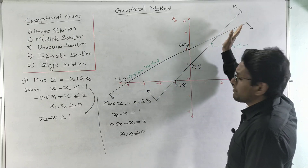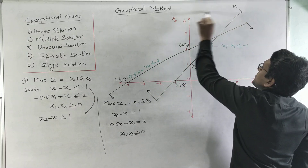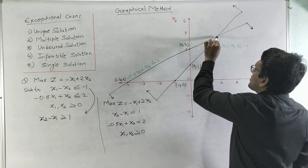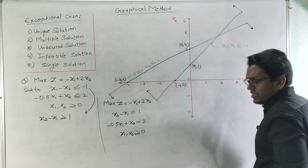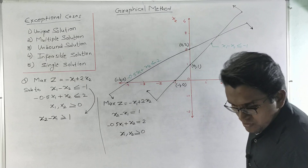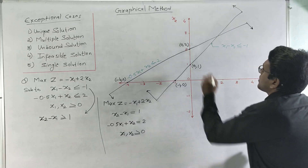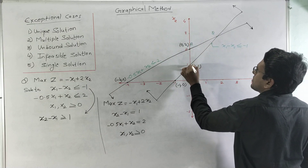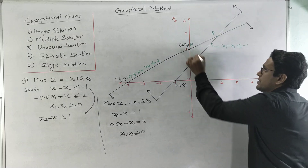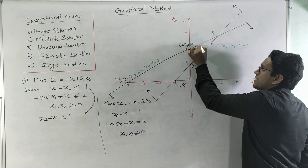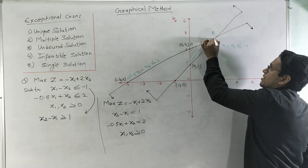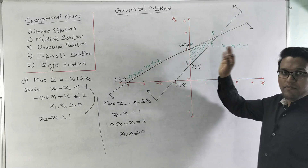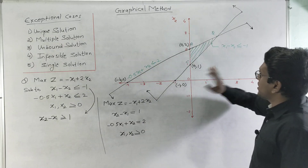Previously with only the first constraint the feasible region was large, but after drawing both constraints our feasible region has been reduced to a bounded portion defined by three corner points, which I will call A, B, and C. The feasible region is restricted to this area.